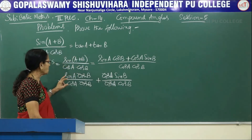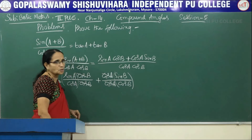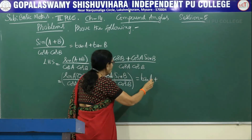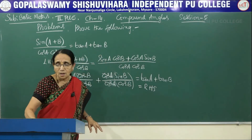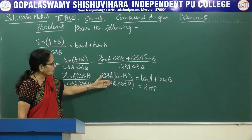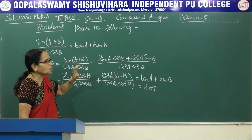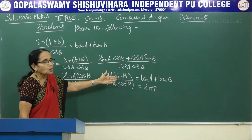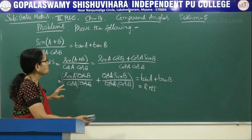Clearly we see that cosB cancels in the first term and cosA cancels in the second. What is remaining? sinA divided by cosA, and sinB divided by cosB. Using the basic definition, sinA/cosA is tanA and sinB/cosB is tanB — which is exactly the right hand side. Hence proved.